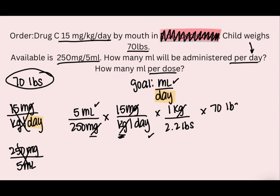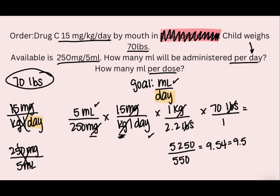We put the 70 pounds on top over one, since it's by itself, and pounds cancels out. Now we multiply across the top and multiply across the bottom. The top gives us 5,250 and the bottom gives us 550. Dividing top by bottom gives us 9.54 milliliters per day, which rounds to 9.5 mL per day.